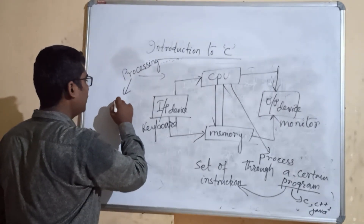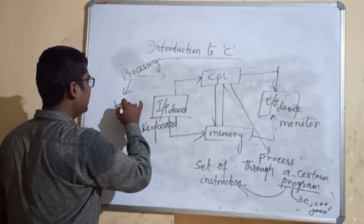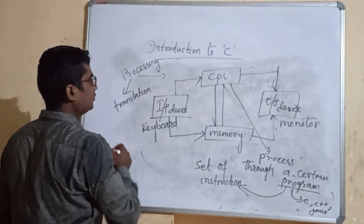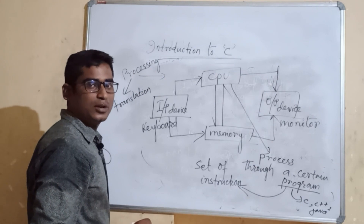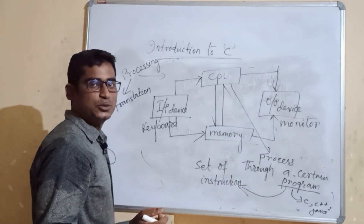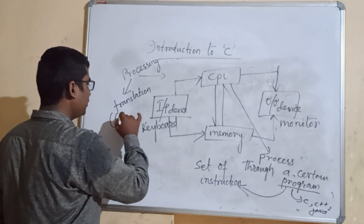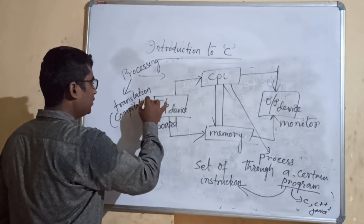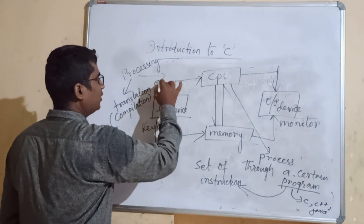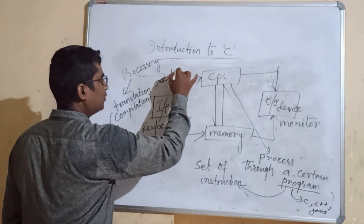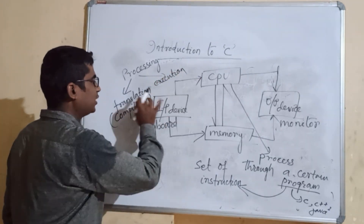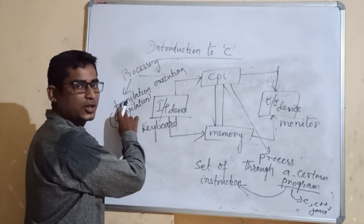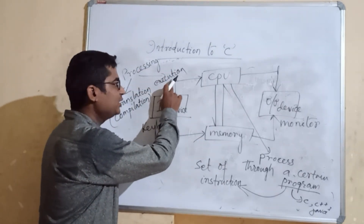A translator is needed to translate the C program. In C, a compiler is used as the translator. Processing is classified into two major parts: the first is compilation, and the second is execution.